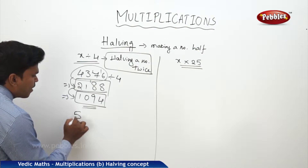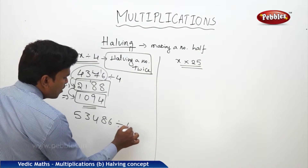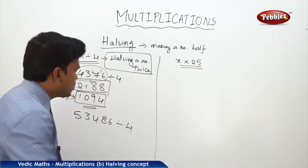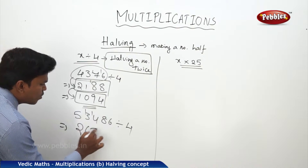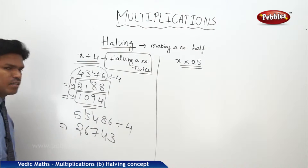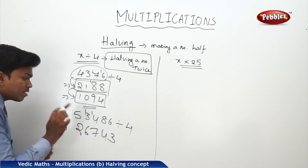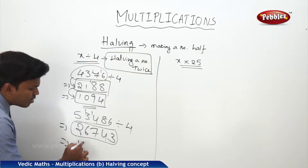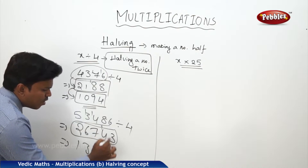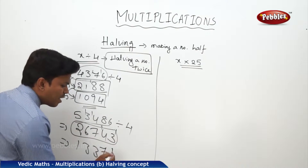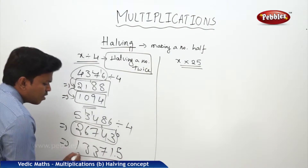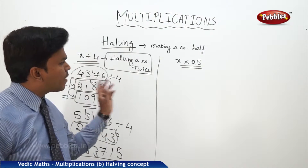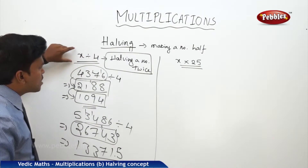One more example: 53486 ÷ 4. Simply make it half twice, fast. First halving: 2 twos, 2 sixes, 2 sevens, 2 fours, 2 threes — you get 26743. Again make it half: 2 ones, 2 threes, 2 threes, 2 sevens, 2 ones with remainder 1. For decimal answer, put a point, add a 0, 2 fives. Answer is 13371.5. Like this we can apply halving for division by 4, where division by 4 is halving a number twice.